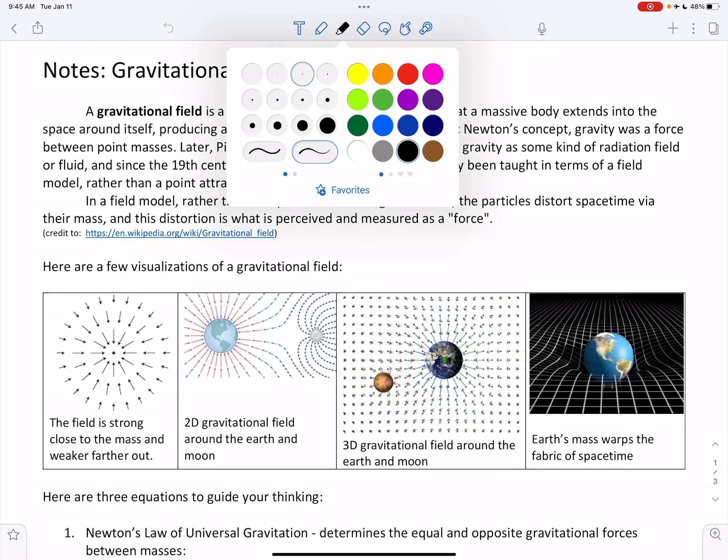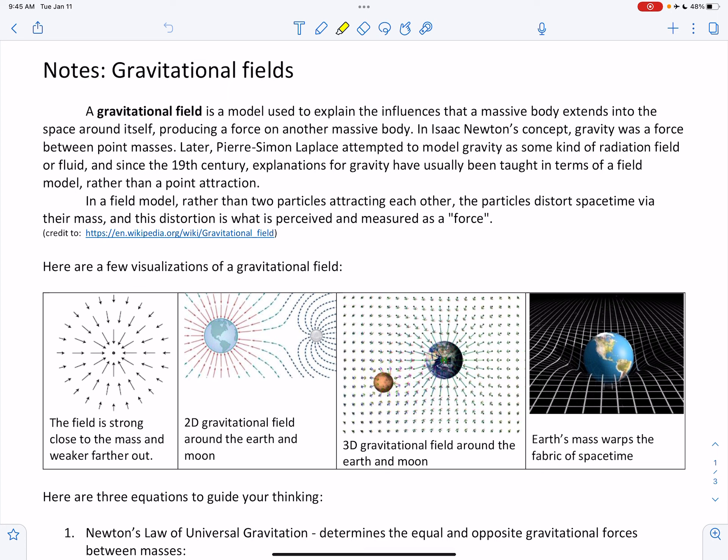So first of all, over here, a gravitational field is a model used to explain the influences that a massive body, like a planet, extends into the space around itself, producing a force on another massive body. In Isaac Newton's concept, gravity was a force between point masses. We've studied that before. It's called Newton's Law of Universal Gravitation.